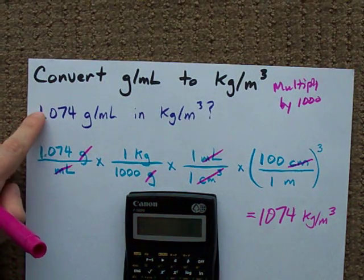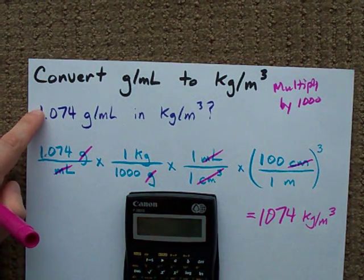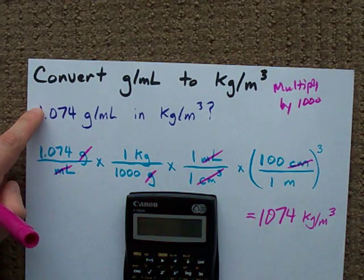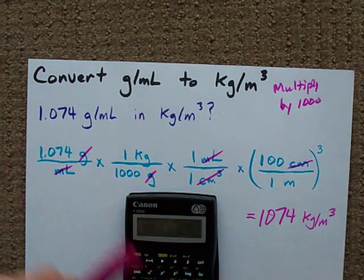See? I'll take my original number, 1.074 times 1000. I get the same number. That's your fast way.